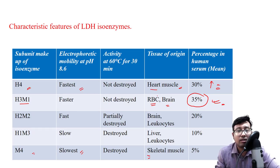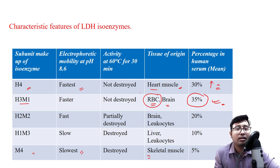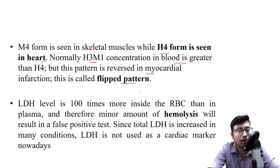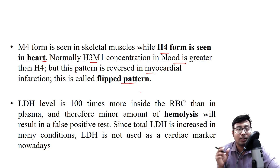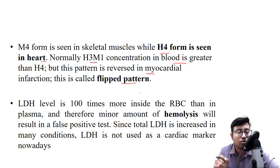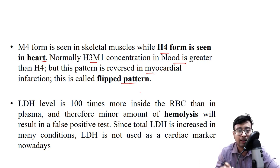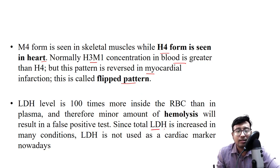Since H3M1 is also present in red blood cells, if there is hemolysis — such as in hereditary spherocytosis, mismatched blood transfusion, or primaquine ingestion — RBCs will lyse and their enzymes will come out, giving a false positive high result for LDH. Therefore, we should always ensure hemolysis does not occur when drawing blood samples. If hemolysis happens, reject that sample and take a fresh one.